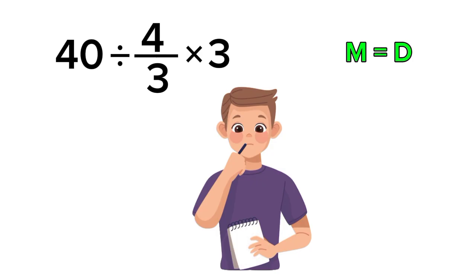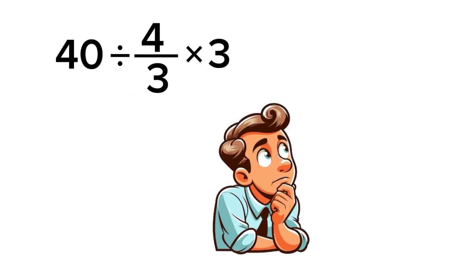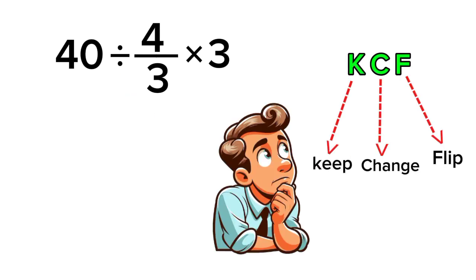So let's solve it properly, step by step. First, we handle the leftmost operation, the division. We have 40 divided by 4 thirds. Now, remember the KCF rule: Keep, change, and flip.